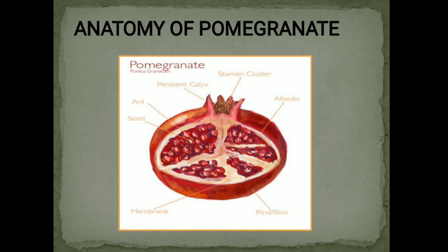Anatomy of Pomegranate. In this figure, we can see the Stamen Cluster, Persistent Calyx, Albedo, Rind, Membrane, Seed, and Aril. The Persistent Calyx and Stamen Cluster combinedly show us the Hypanthodium type of inflorescence, which was discussed earlier.